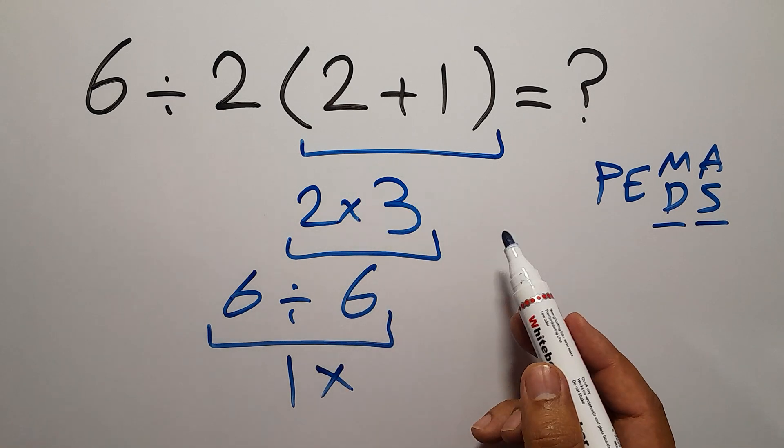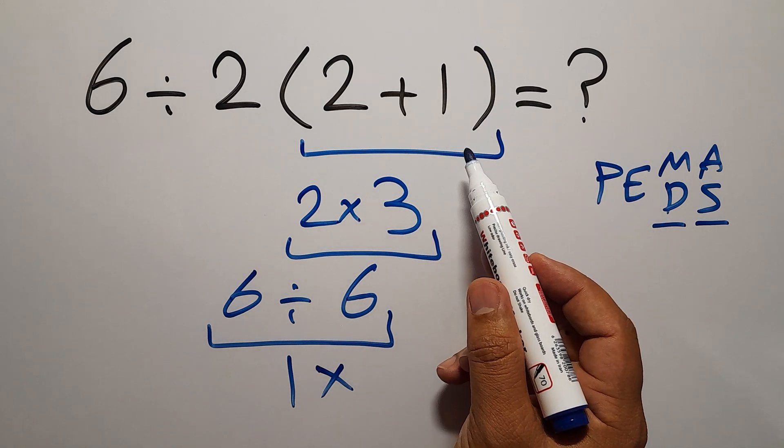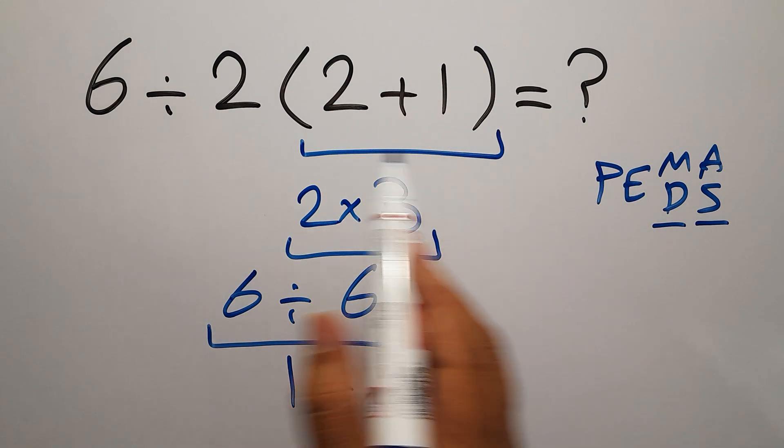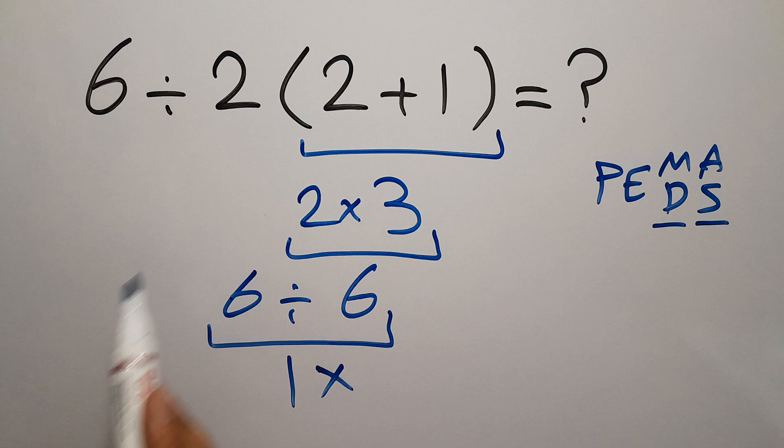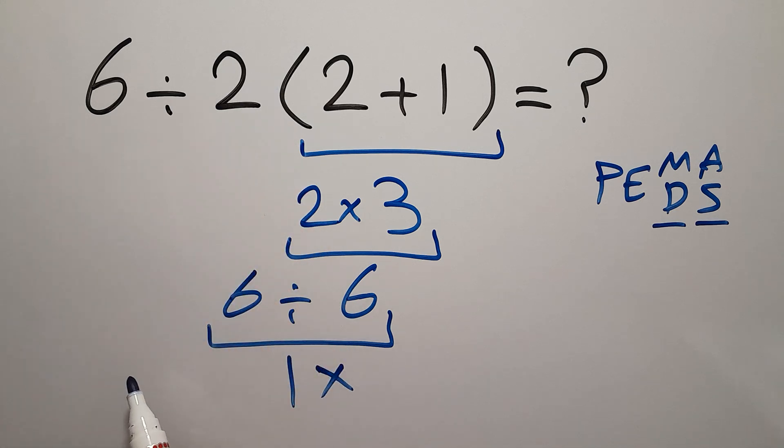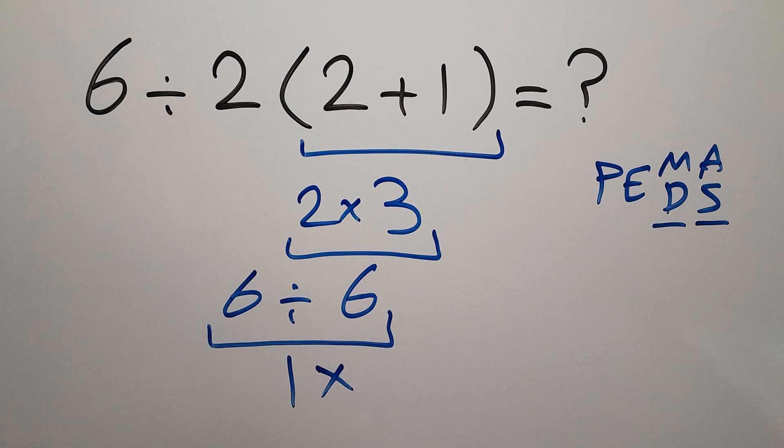So, here, first we have to do this parentheses, then this division, not this multiplication, and finally this multiplication. Let's do it.